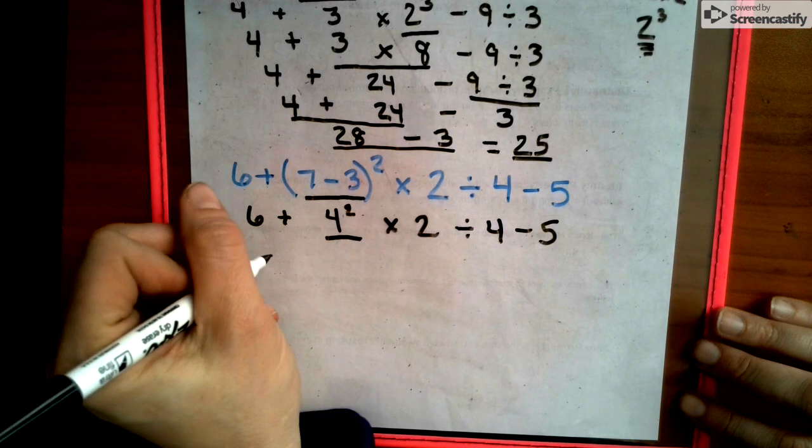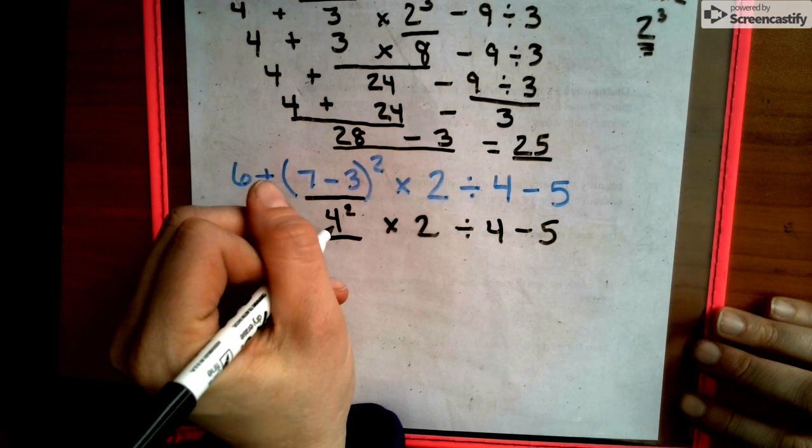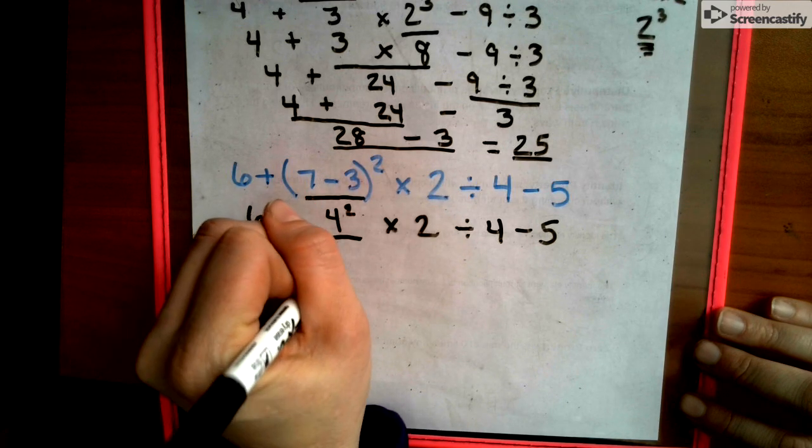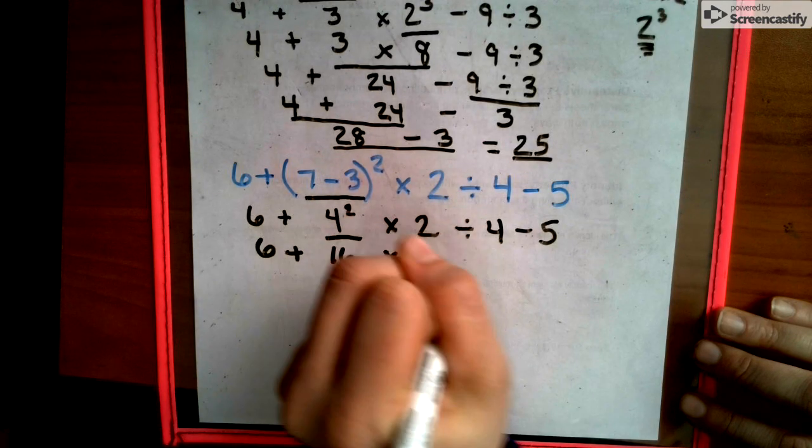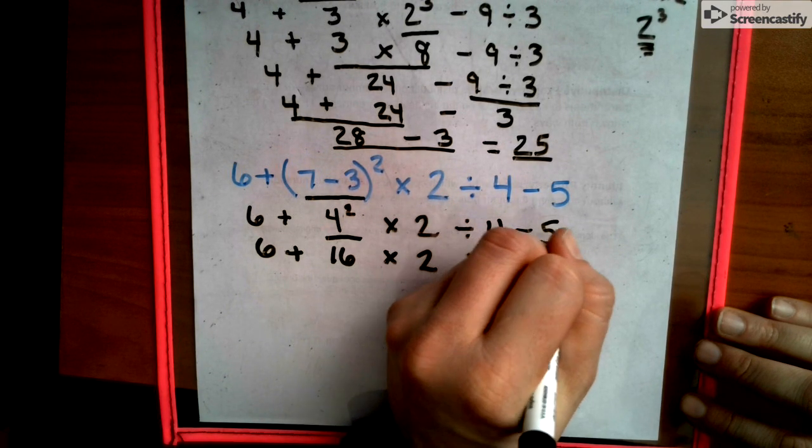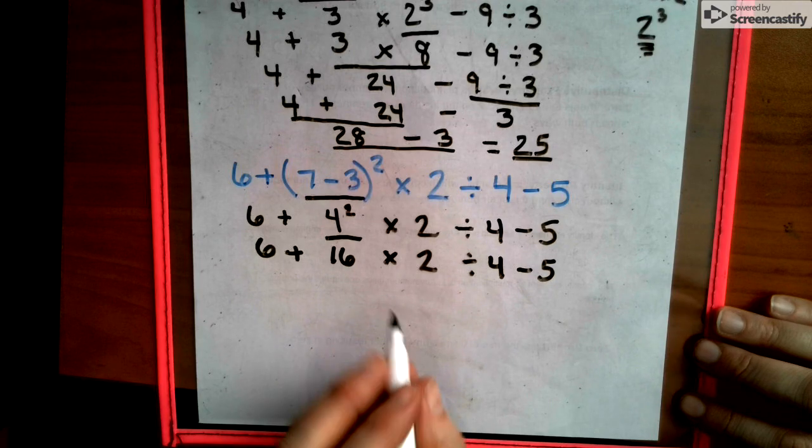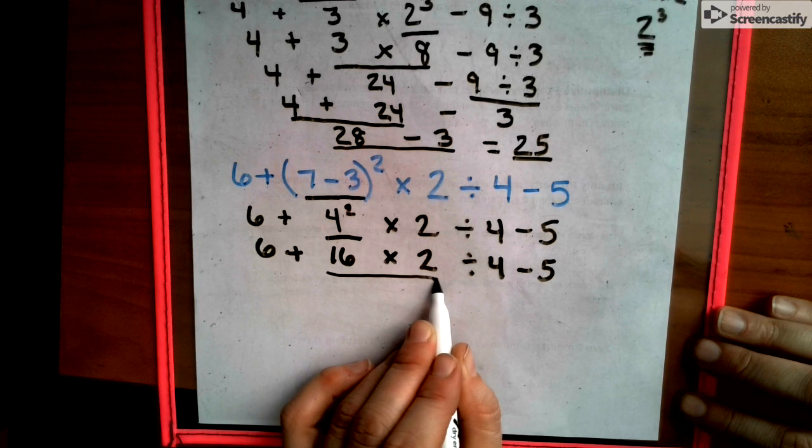So we go to our exponents. 4 times 4. Remember, 4 written twice with times signs. That makes 16. We write down everything else we did not use. Now this is annoying, I get it, but we still have to do it.